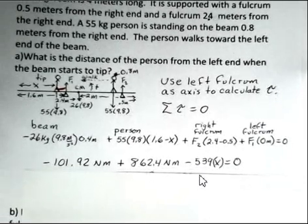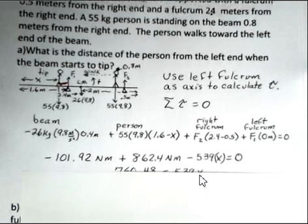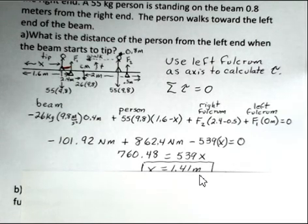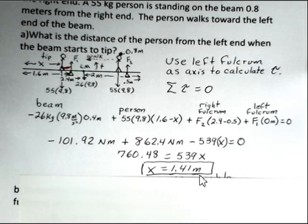F2 is zero as a force. F1 has zero lever arm. And calculating, gathering together numbers, take the 539x to the right side, and then dividing, we find 1.41 meters for the value of x.